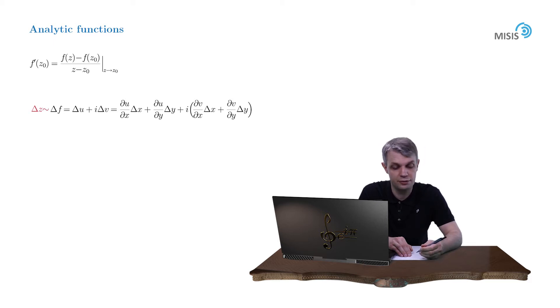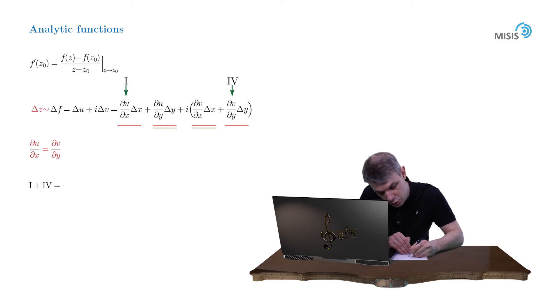So let us reorganize the right-hand side of our equation and combine the first and fourth term and the second and third. We start with the combination of the first and fourth. It contains the necessary constituents delta x and i delta y. However, they have different pre-factors: du/dx and dv/dy. But let us require that these coefficients are equal to each other. Then they can be factored out and we obtain du/dx times delta x plus i delta y, which is nothing but delta z.